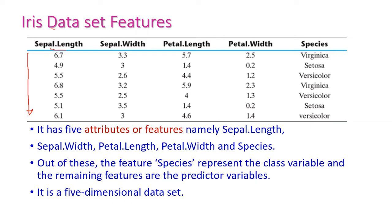The attributes shown are: sepal length, sepal width, petal length, petal width, and species. Species is the class attribute. These are the attributes of the IRIS dataset — five attributes, which are otherwise called as features.